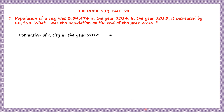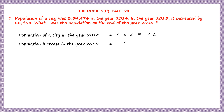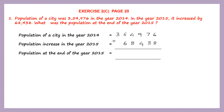So let's begin with our statements. Population of a city in the year 2014 is given to us as 3,54,976. In the year 2015, the number increased by 68,438. We need to add up these two numbers to find the population.